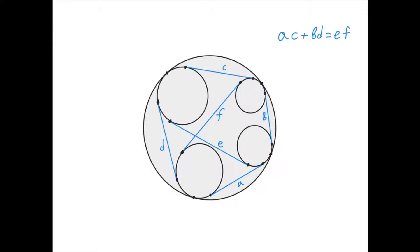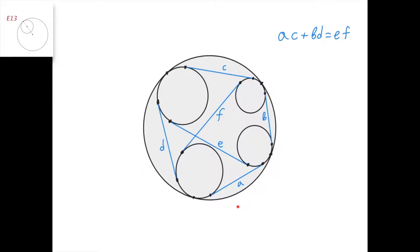Today we're going to talk about Casey's theorem. Here's what it states. Suppose you have a large circle, and then you take four circles that are internally tangent to the larger circle. Now take each pair of these four small circles, and for each pair draw the outer common tangent line, and take the segment enclosed between the two points of tangency.